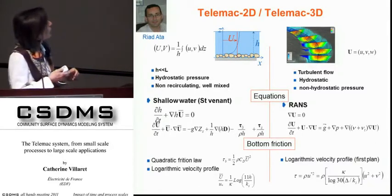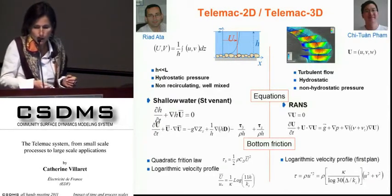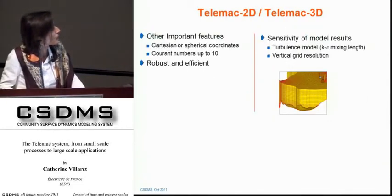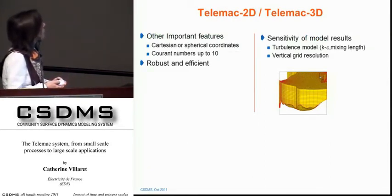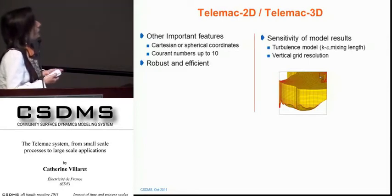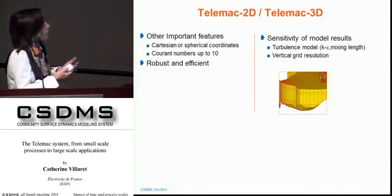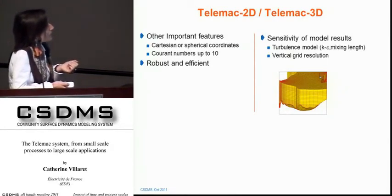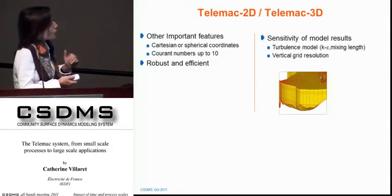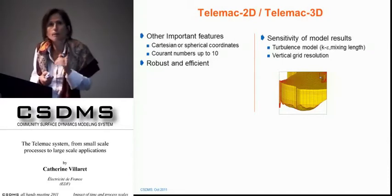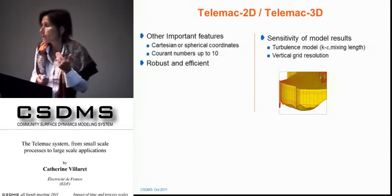These are the people responsible for the 3D model, including Chituan who leads it — you can contact them if you decide to use the models. In summary: the 2D model is the most robust and efficient for large-scale and long-term applications. The 3D model is more precise and gives detailed results on the vertical structure, but is highly sensitive to the choice of turbulence model — k-epsilon or mixing length — and to the vertical grid resolution and the setup of vertical planes. You need to do a lot of tests to be very careful when using this model.